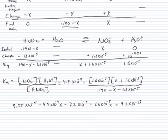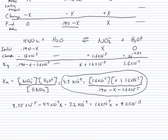When we do our algebra and distribute out this entire part of our expression, we see that we get 8.55 times 10 to the minus 5th minus 4.5 times 10 to the minus 4th. Then we see we have a very small number, 7.2 times 10 to the minus 9th, that's insignificant. And on the other side, 1.6 times 10 to the minus 5th X plus 9.2 times 10 to the minus 13th. That's really insignificant.